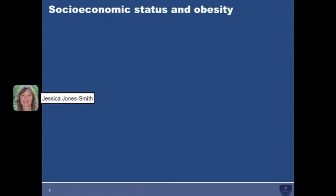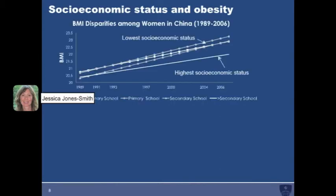Finally, I have a few ongoing secondary data analysis projects that document socioeconomic disparities in the risk for obesity in various populations. One of my interests is in how the relationship between socioeconomic status and overweight or obesity might be changing in low and middle income countries as these countries experience the nutrition transition. Using data from the China Health and Nutrition Survey, I've documented the emergence of a disparity in overweight prevalence among women in China, whereby women with the lowest education levels, shown here with the line with the square markers, now have a higher average BMI and higher risk for overweight compared to women with the highest education levels, shown here in the solid line.